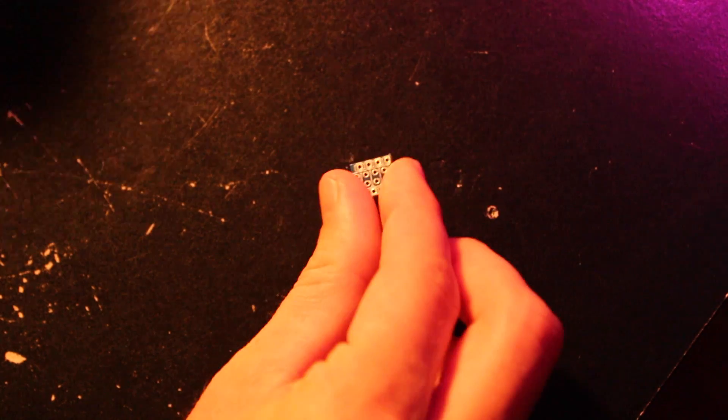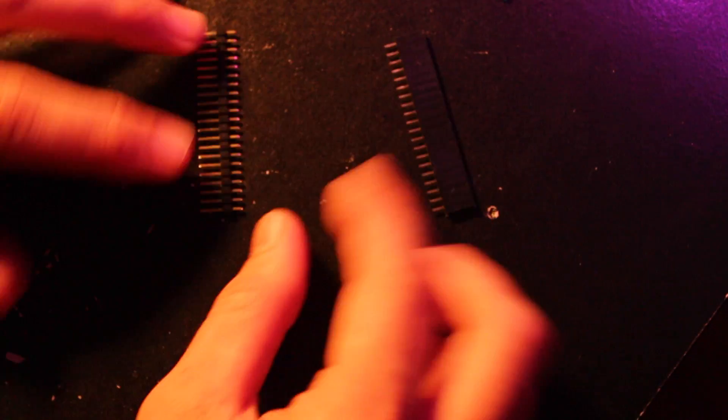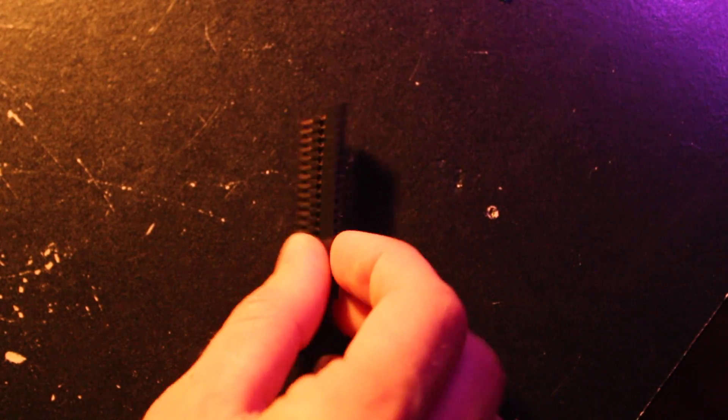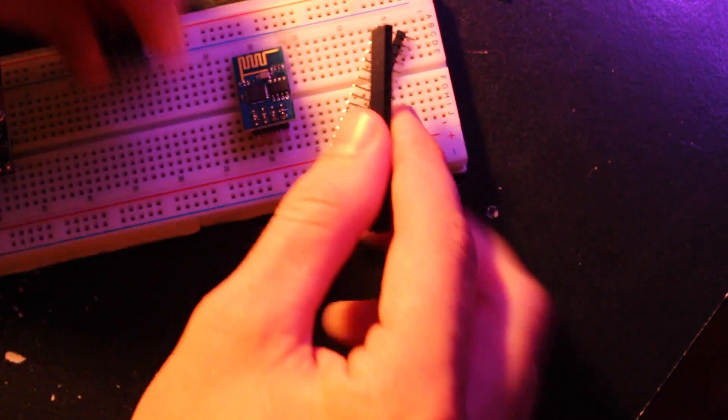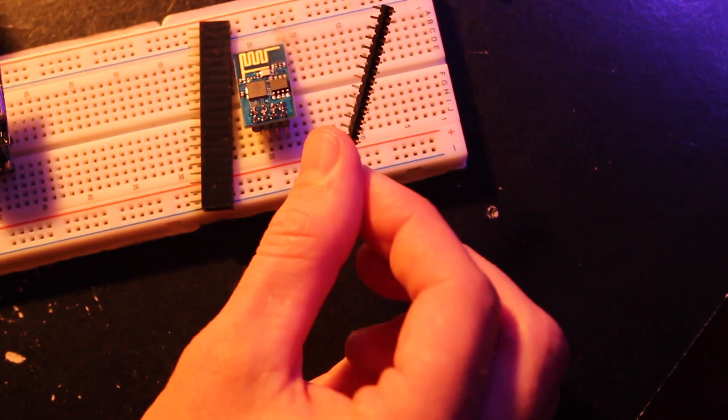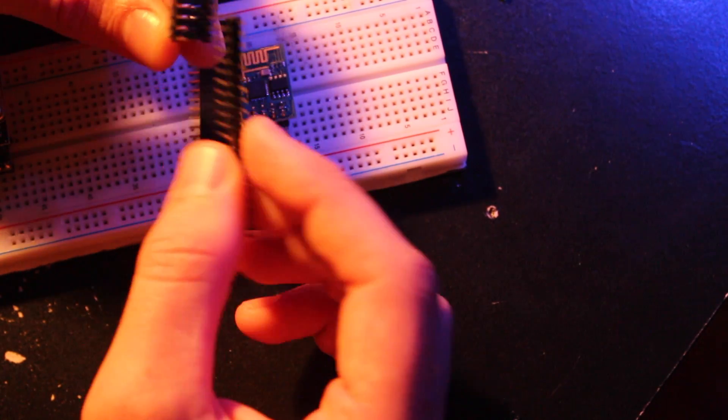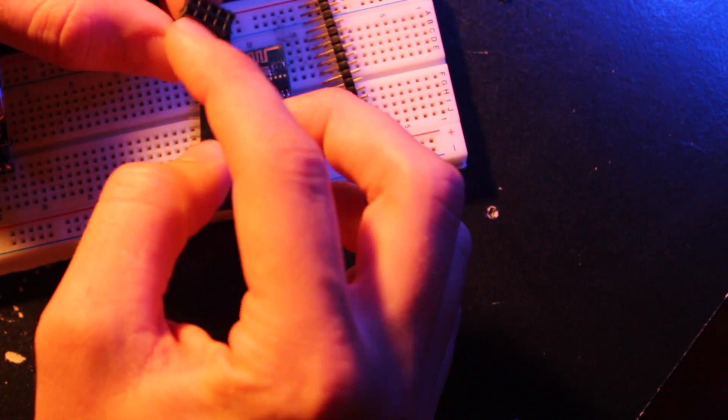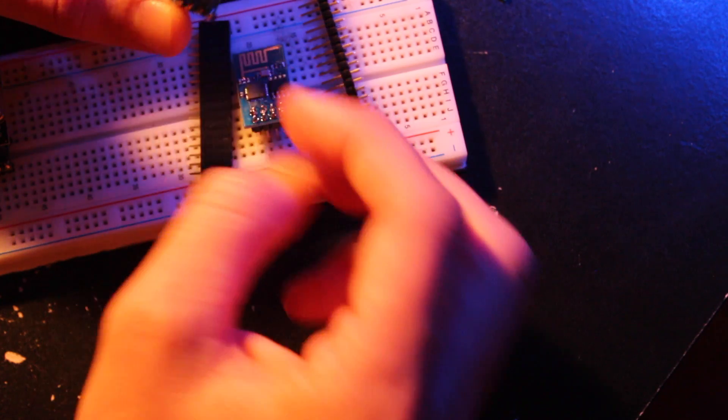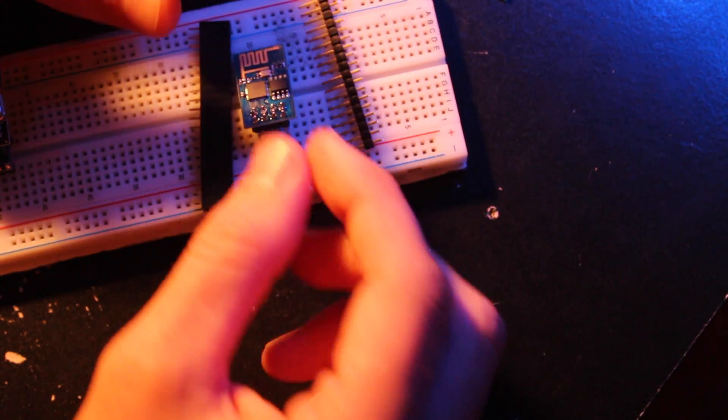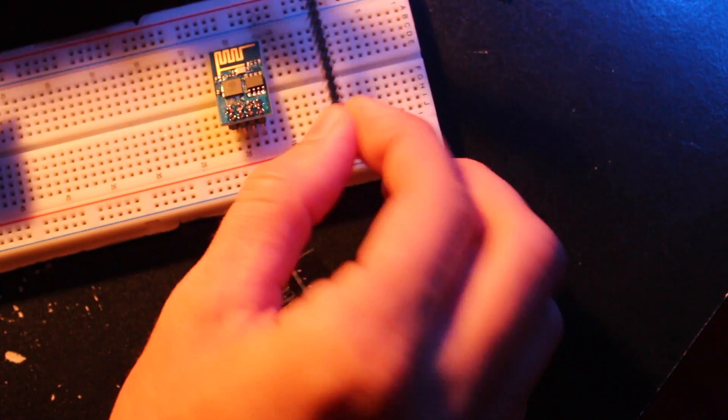To build the adapter you just need some headers. You need a female header and a male header, and then you cut these down. So four-pin male headers on the bottom, and then two four-pin female headers on the top. These are pretty standard - just 0.1 inch center-to-center headers, so nothing special there.